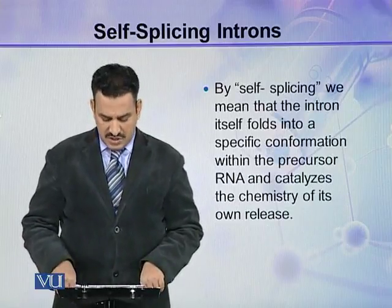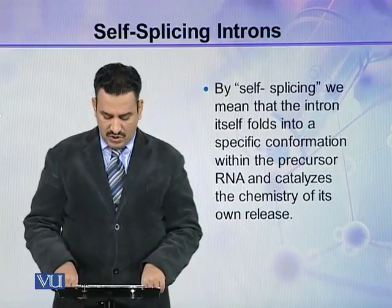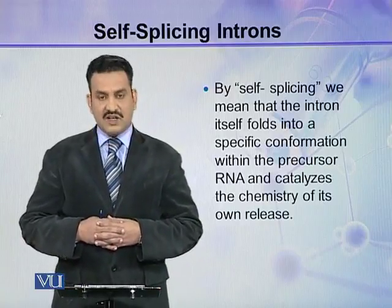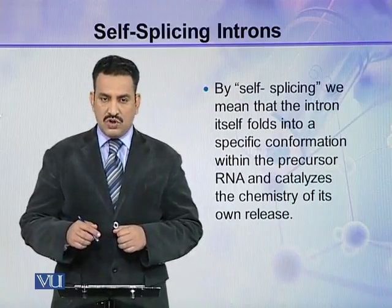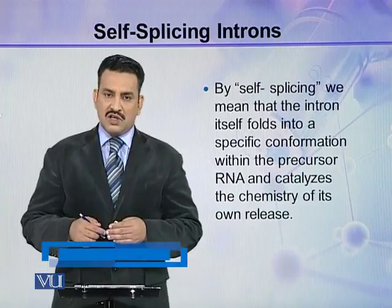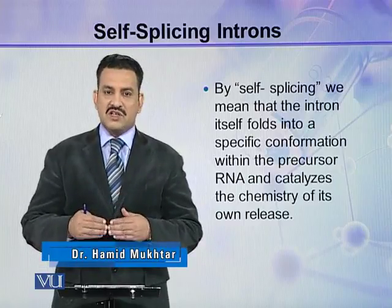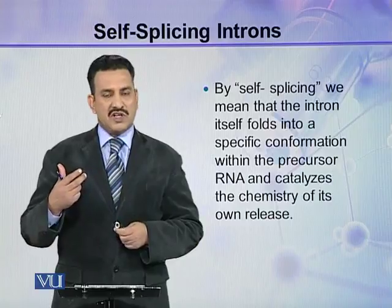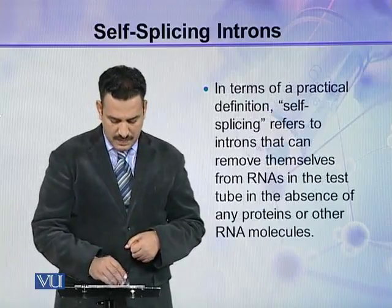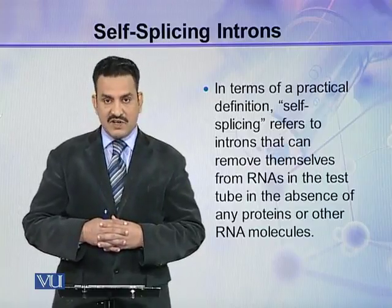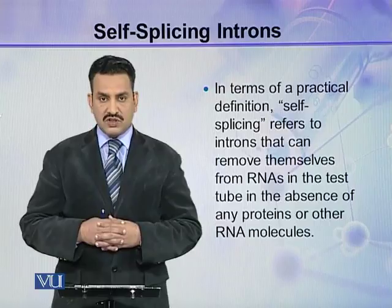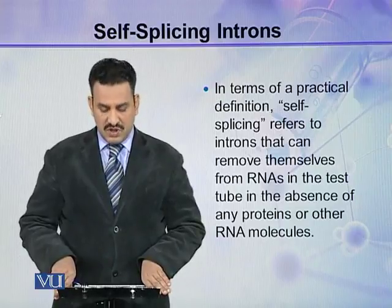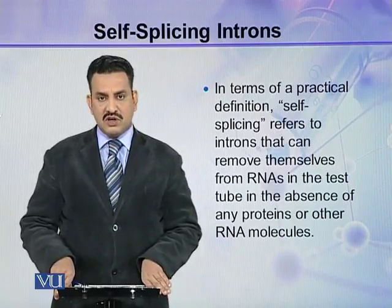By self-splicing, we mean that the intron itself folds into a specific conformation within the precursor RNA and catalyzes the chemistry of its own release. The RNA intron releases itself from the mRNA — no external spliceosome or external proteins are required. In terms of a practical definition, self-splicing refers to introns that can remove themselves from RNAs in a test tube in the absence of any proteins or other RNA molecules.